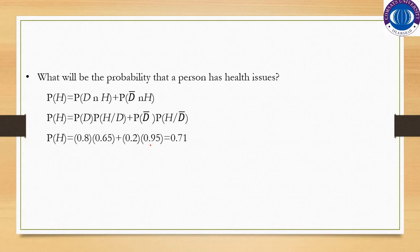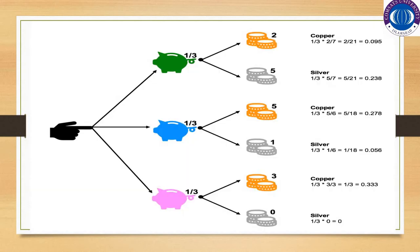The probability that a person has health issues is 0.71. Now, concentrating on the next scenario: there are three piggy banks. The selection probability of each piggy bank is 1/3, since there are 3 in total — applying the formula: number of favorable outcomes divided by total number of outcomes gives 1/3 for each.